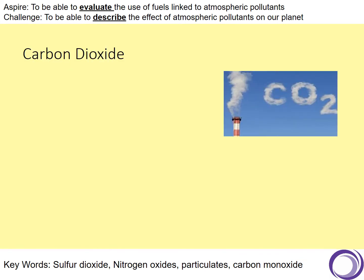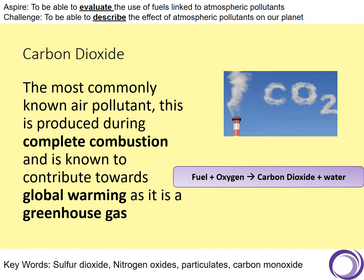We'll start with carbon dioxide. You're probably not surprised to hear this one. Carbon dioxide is the most commonly known air pollutant and it's produced during what we call complete combustion. Complete combustion is when the fuel has sufficient oxygen — so when there's plenty of oxygen getting into that reaction. There's actually an equation on the screen that summarises complete combustion. Carbon dioxide is known to contribute towards global warming as it is a greenhouse gas, and we will look at global warming in a later video.